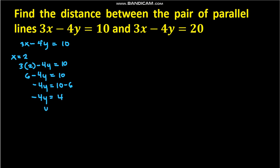So 10 minus 6 is 4, thus y = -1. Therefore, we have the point (2, -1).